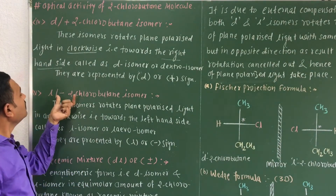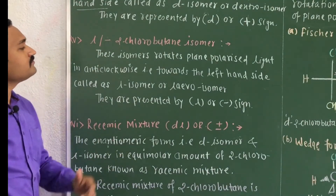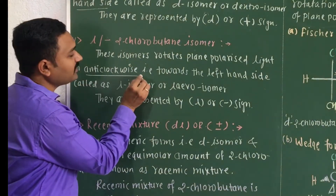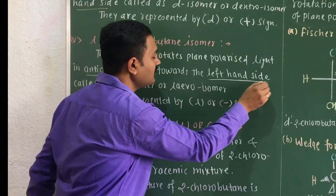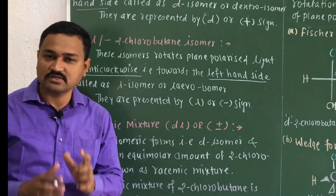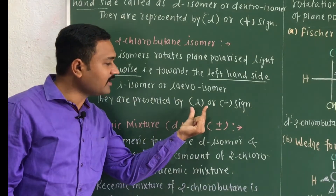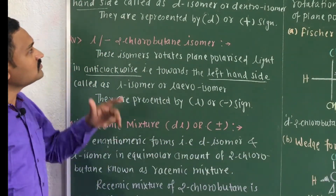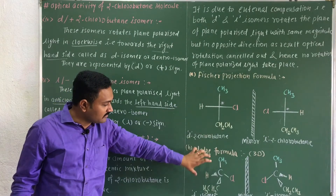The L isomer, or L-2-chlorobutane, rotates the plane polarized light in the anticlockwise direction — that is, towards the left-hand side. This isomer is called the levo isomer. It is represented by a small 'l' or a minus sign (−) in optical activity. These are the two enantiomeric forms of 2-chlorobutane represented by Fisher's projection and the wedge formula.